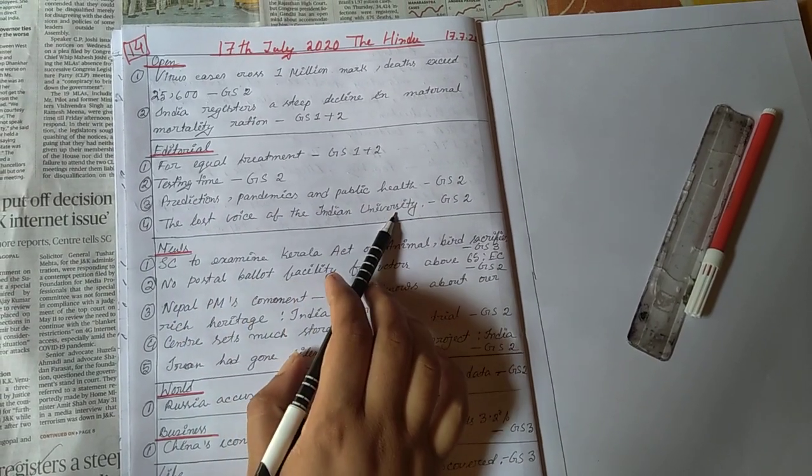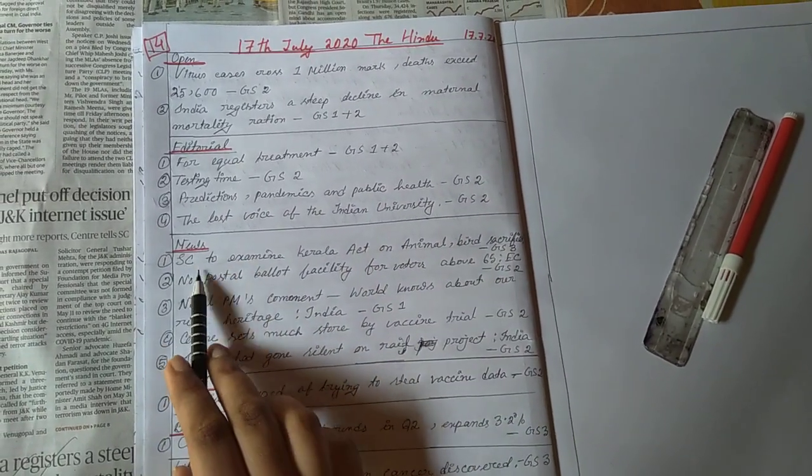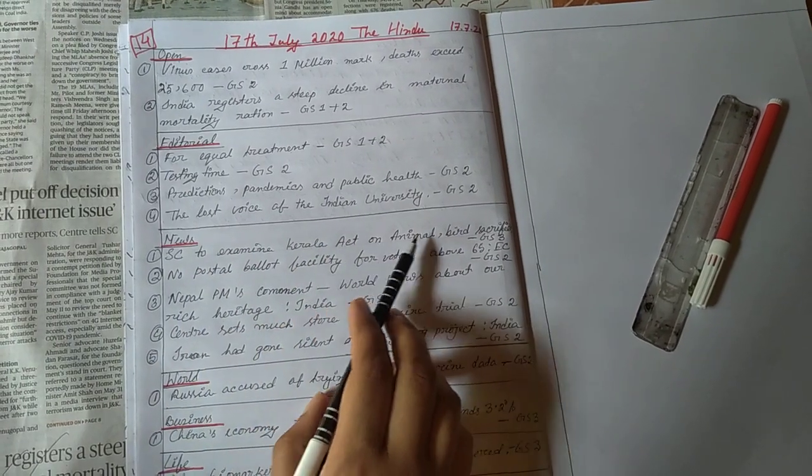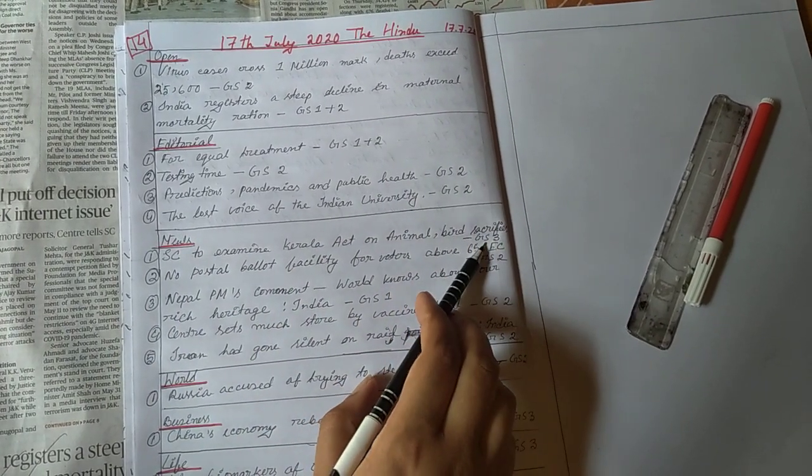The lost voice of the Indian University, GS paper 2. Then the news page, Supreme Court examined Kerala Act on animal bird sacrifice, GS paper 3 conservation.